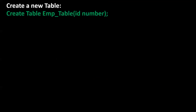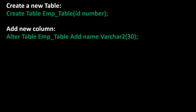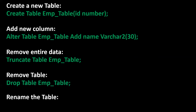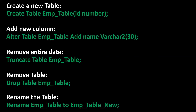The first DDL command is create, to create a new table — here is the syntax. If you want to add a new column, we use the alter statement. To remove data from a particular table, we use truncate. If you want to remove a particular table from the database, we use the drop command. To rename a table, we use the rename command.